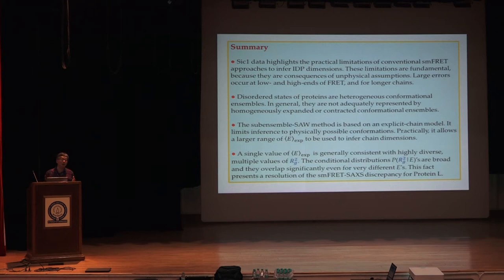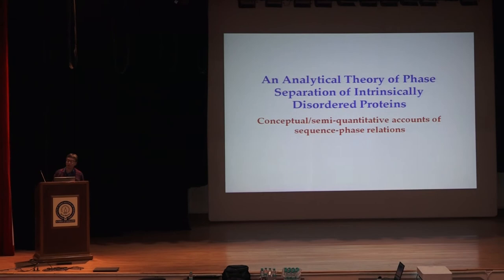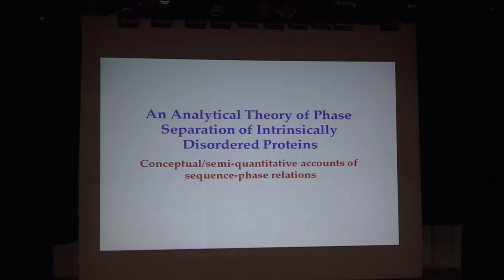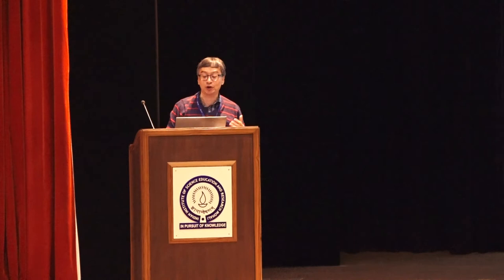Let me now switch gears to talk about a set of analytical theories we developed for phase separation of intrinsically disordered proteins. At the outset, let me say it's a very coarse-grained method. Probably for quantitative comparison it's not yet able to do that, but I think it is useful for conceptual and semi-quantitative accounts of sequence dependence. The emphasis is on the sequence dependence — we probably cannot predict the exact critical point or the exact critical volume fraction, but the trend for different sequences may still be very useful.